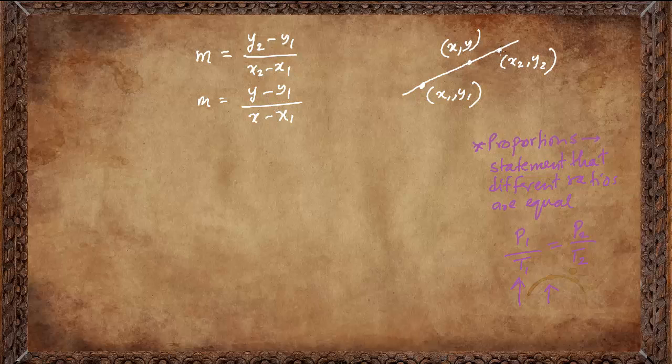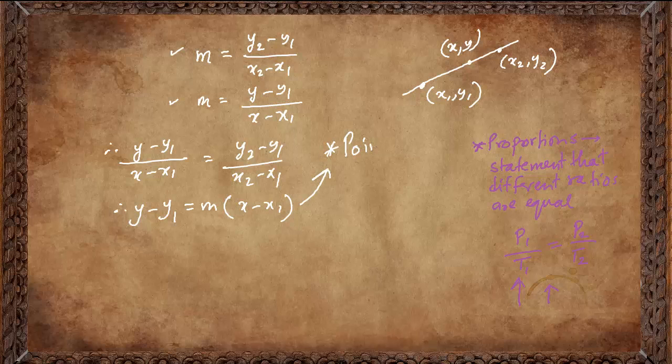Now, this can also be calculated using the other point. Since these different ratios are equal, we can simply write (y-y1)/(x-x1) equals to (y2-y1)/(x2-x1). This is proportion because this ratio and this ratio are equal. If we can simply remove this and using algebra write the symbol m, we can simplify and write y minus y1 equals to m multiplied by x minus x1. And thus, we get the equation of a line. This particular equation is known as the point slope form.